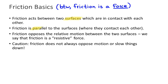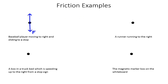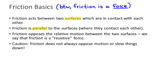Friction is always parallel to those surfaces at the position where they contact each other, and it opposes the relative motion between the two surfaces. For that reason, we say that it is a resistive force. Another example of a resistive force would be air resistance or drag.